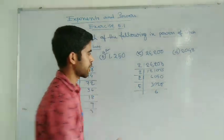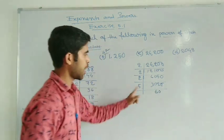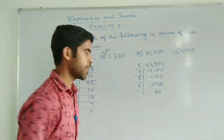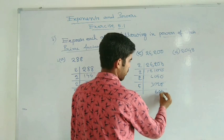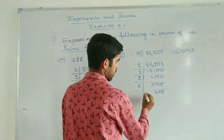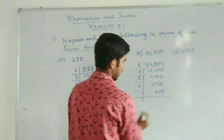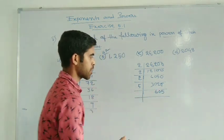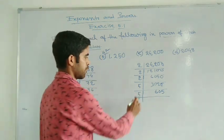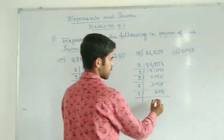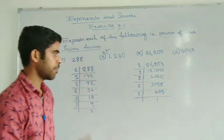5 goes into 30 six times. And 5 goes into 2 zero times, because 2 is less than 5. Now it is 25 — so 5 goes into 25 five times. So you write here: 5 times gives 25. Now here is 605 again. This one you divide by 5 — 5 goes into 6 one time, remainder 1.